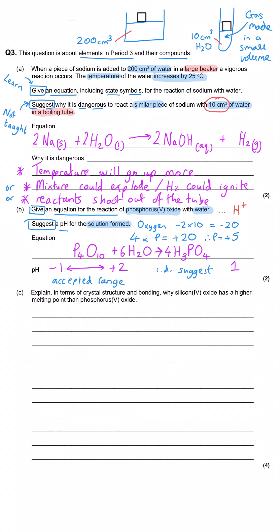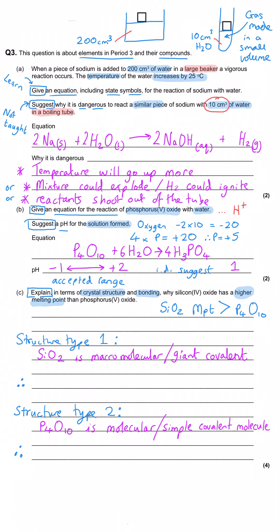Part C says explain in terms of crystal structure and bonding why silicon dioxide has a higher melting point than phosphorus pentoxide. So in a situation like this you need to talk about what the type of structure is for each of the two things you are comparing. Silicon dioxide is SiO₂ which is macromolecular or you could call it giant covalent, whereas P₄O₁₀ is molecular or simple covalent molecule.